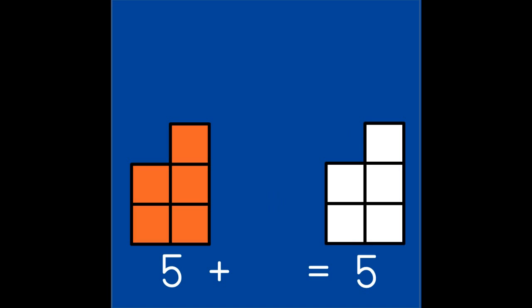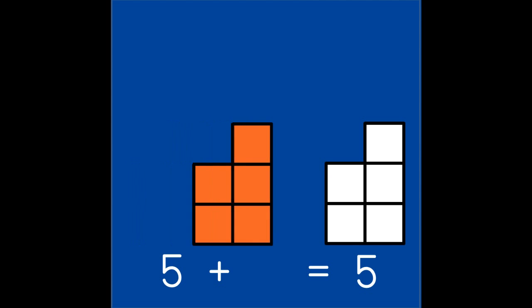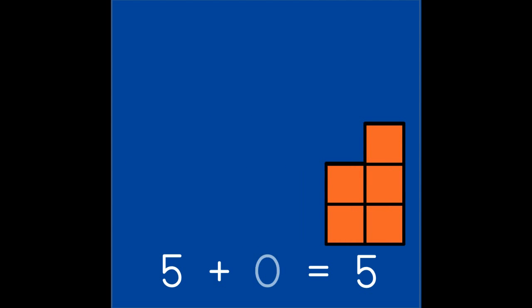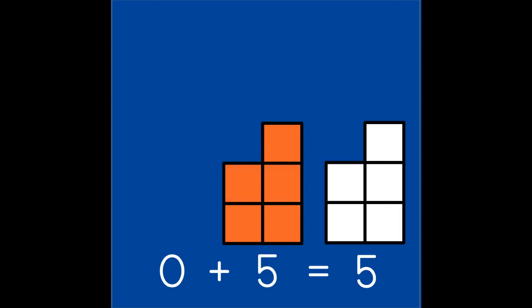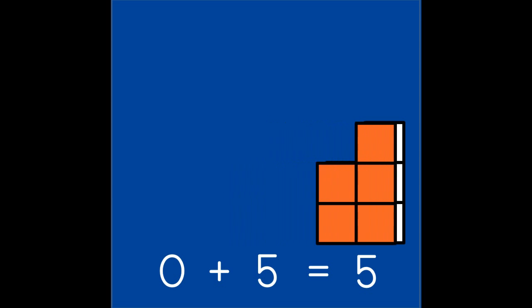Our last partners to make 5 are sort of tricky, because one of the partners is 0. 0 means nothing. Let's put the number 5 in our puzzle — 5 needs 0 to make 5, because 5 and 0 are partners of 5. And if we switch the partners and put 0 in our puzzle first, which means nothing, we can see that we still need 5 to make 5.